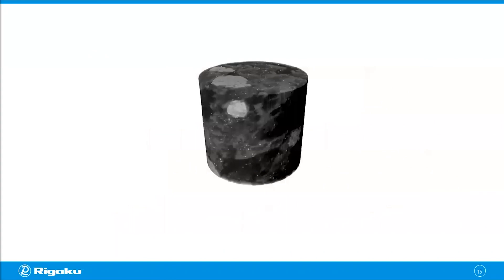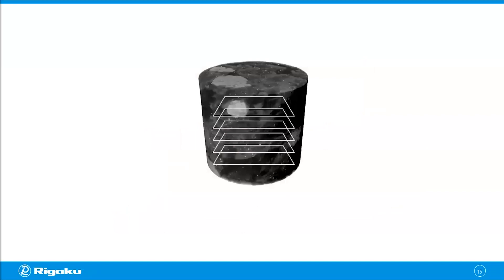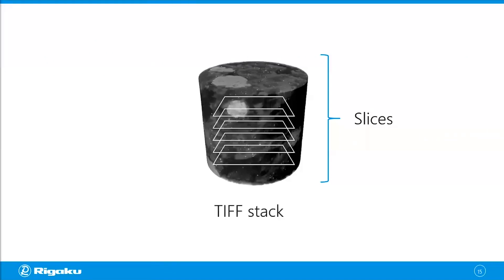File-structure wise, the volume is saved as multiple 2D slices stacked on top of each other to create the 3D information. This is why CT scans are often referred to as TIFF stacks. Now let's take a look at one of those slices.